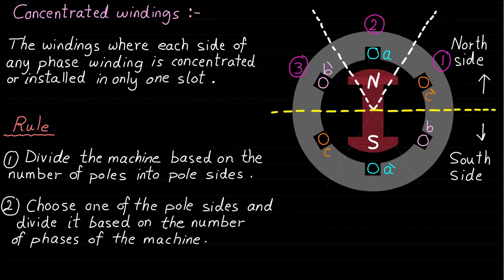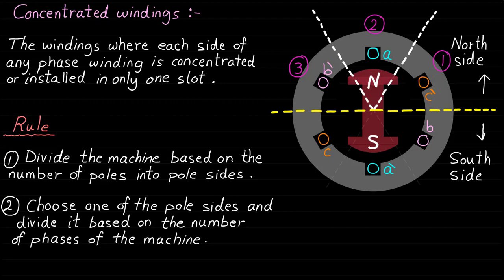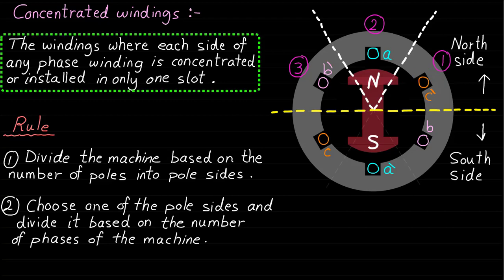Each of these phase coil sides is installed in only one slot. That means side A of phase A is installed in one slot, side B- of phase B is installed in one slot, and side C- of phase C is installed in one slot. That is why we say that in concentrated windings, each side of any phase winding is installed in only one slot.